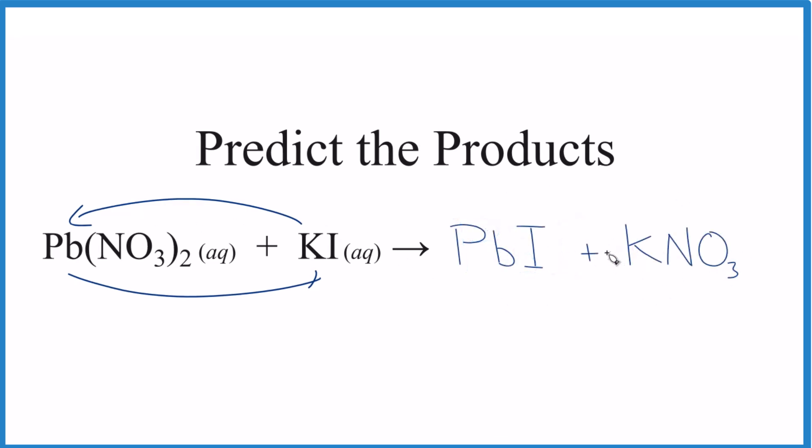So these are both ionic compounds. Potassium, that's going to be plus 1, and the whole nitrate, that's a 1 minus. So these charges balance.